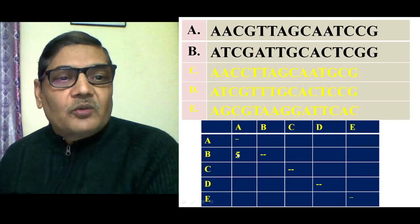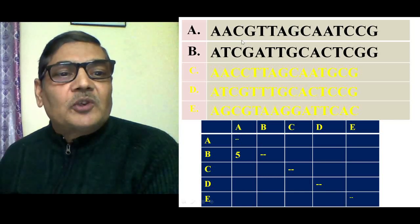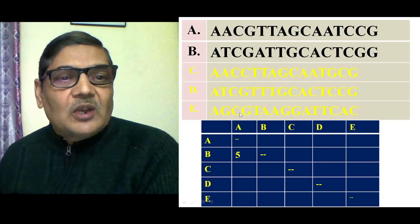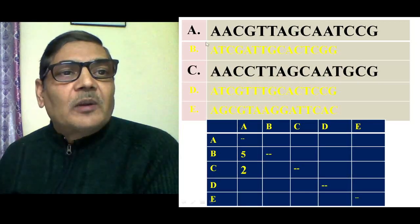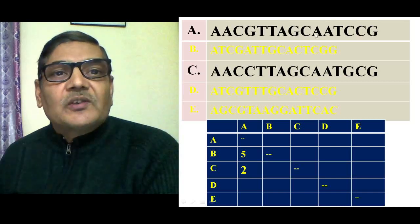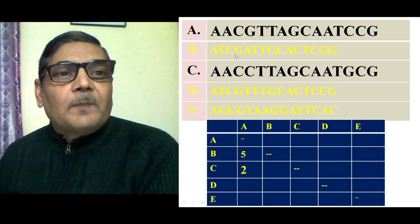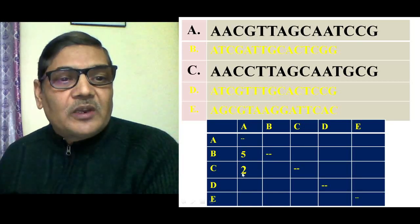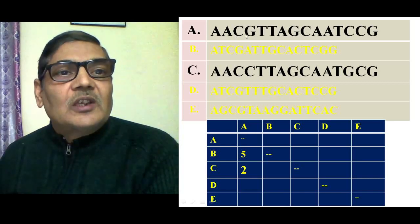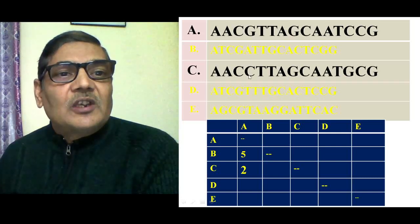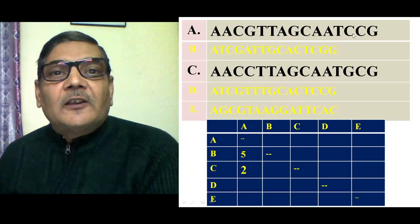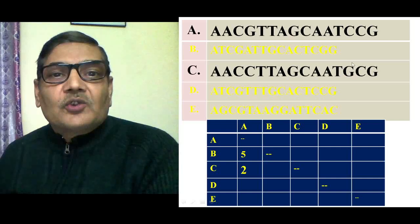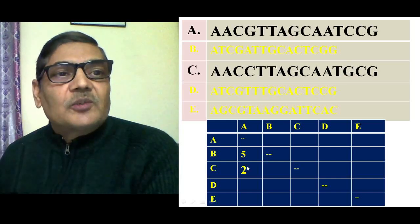This is a table where we are going to arrange the similarity which exists between the species. As just said, between A and B, five nucleotide variations are there. Now we compare A with C. We find that only two nucleotide variations exist between A and C. For example, at the fourth position there is G in species A, which is replaced by C in species C, giving us two nucleotide variations between A and C.